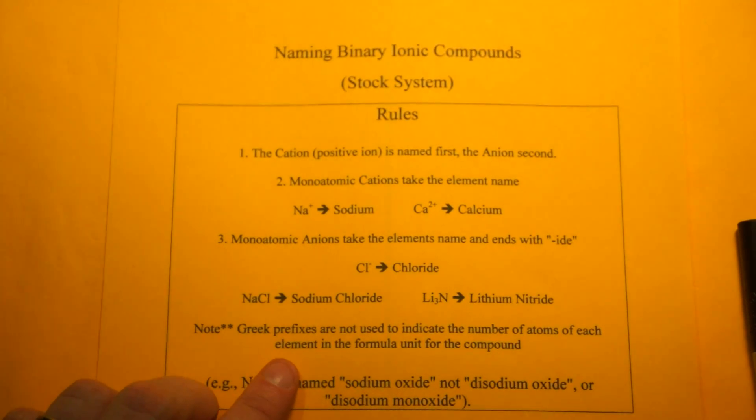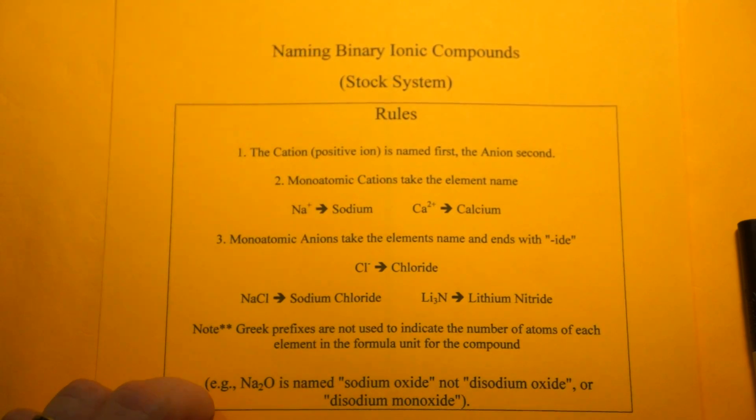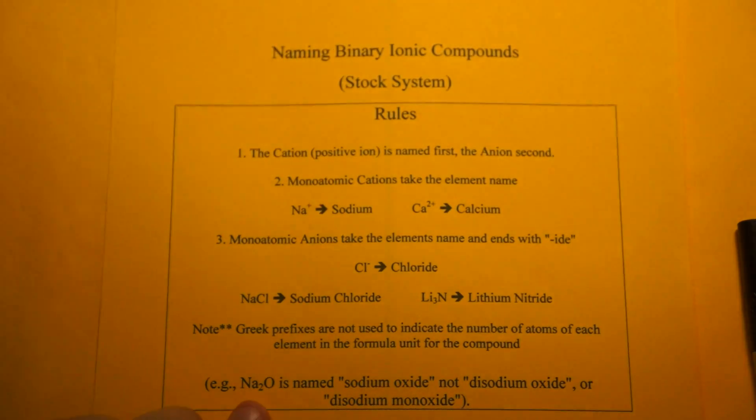Note: Greek prefixes are not used to indicate the number of atoms of each element in the formula unit for the compound. It's the responsibility of the person writing the formula from the name that has to figure that out. Another example: Na2O is named sodium oxide, not disodium oxide, so no prefixes.